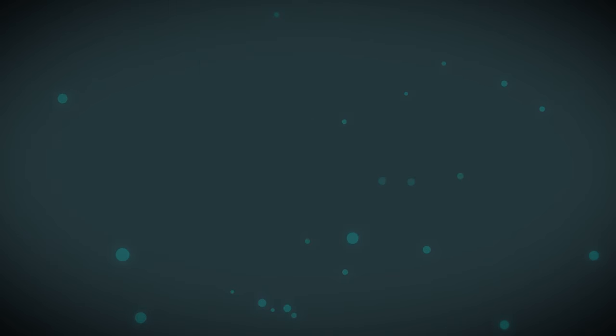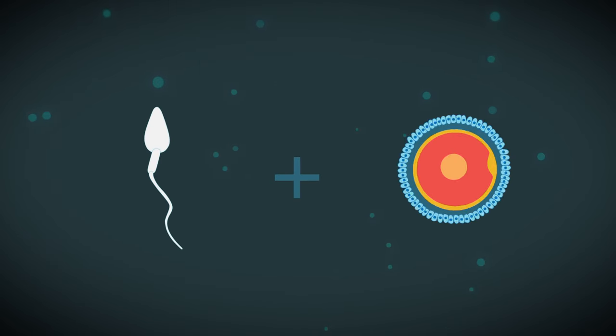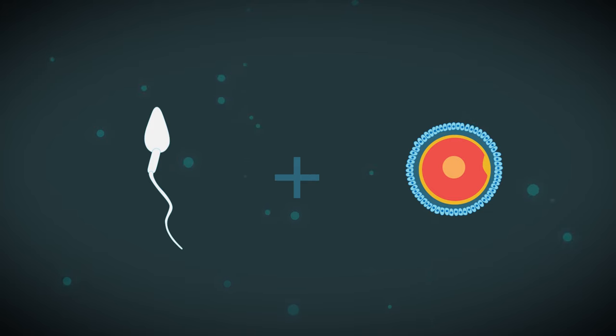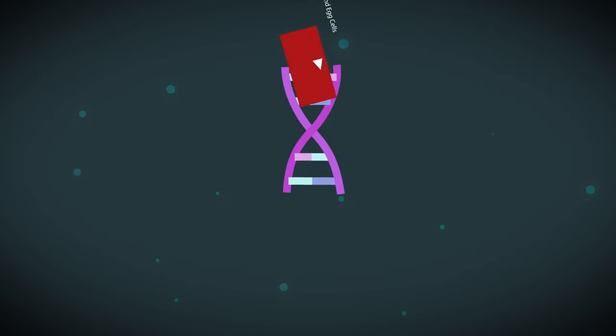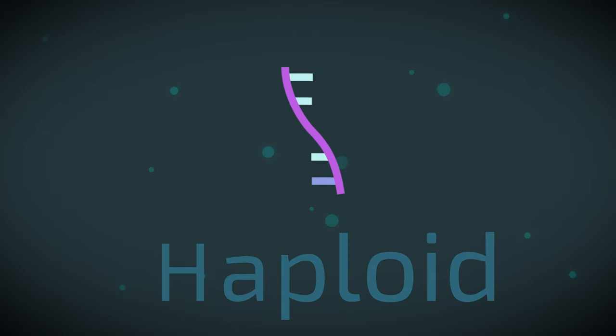To make a baby a sperm has to join with an ovum or an egg cell. We looked at sperm and egg cells in detail in this video. You should know that they only have half of the DNA of a body cell. They are haploid.